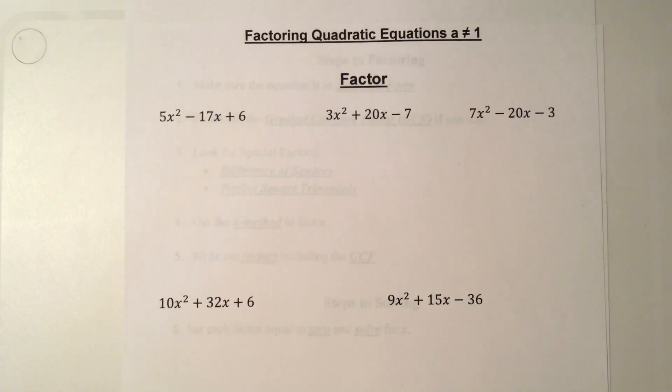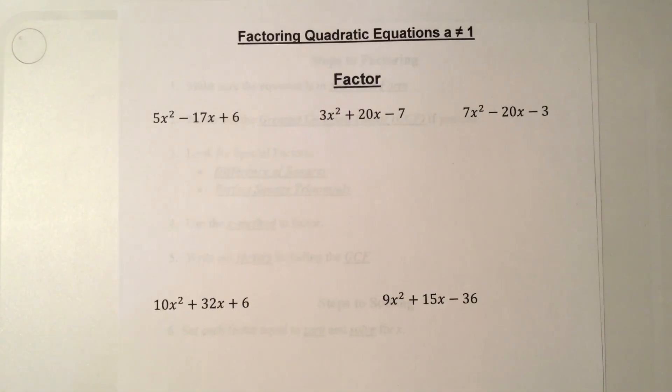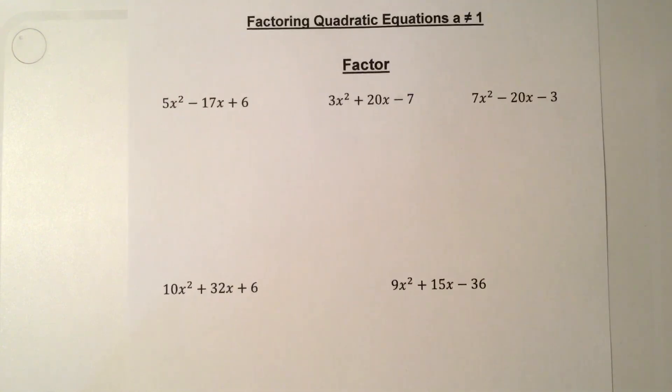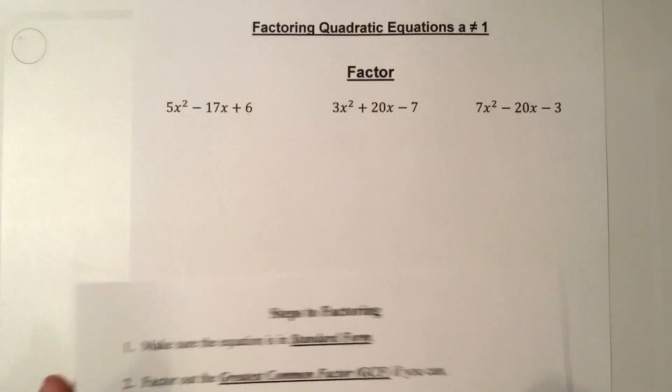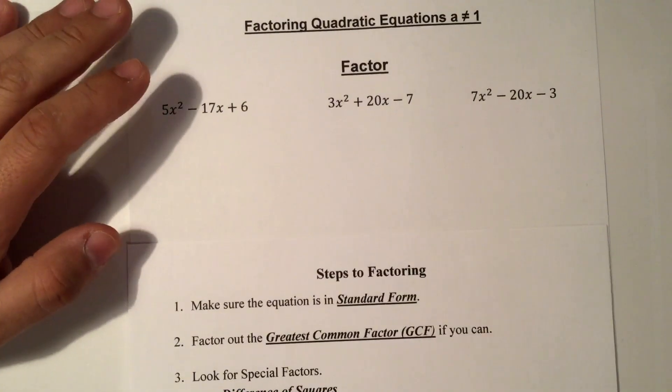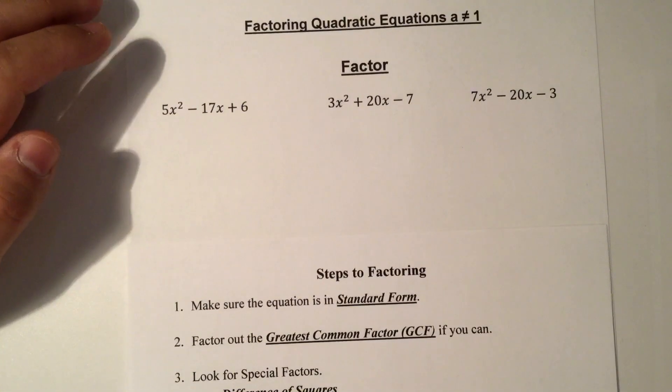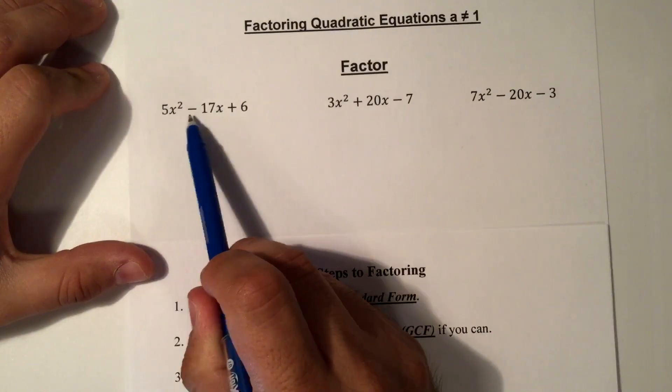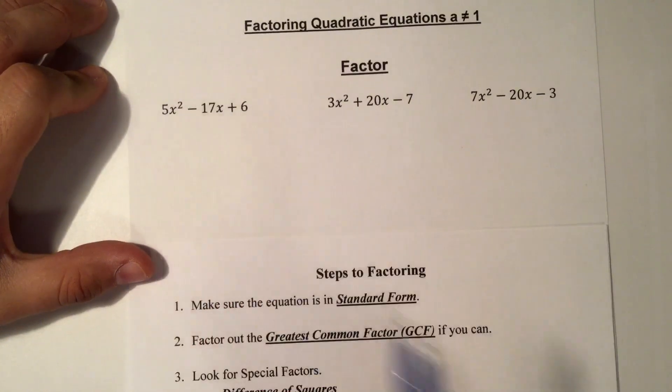All right, so these are the notes for factoring quadratics when a is not equal to 1. We're still going to follow these steps for factoring. The first step is to ensure that it is in standard form, which is y equals ax squared plus bx plus c, which it is.